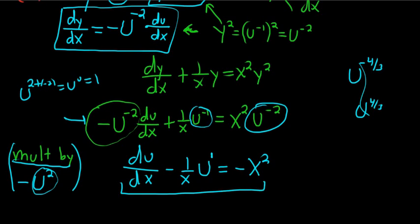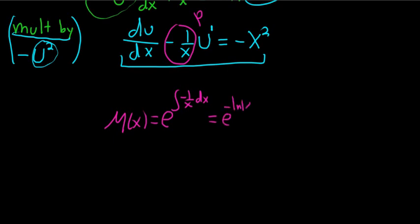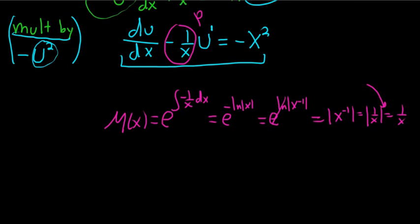This equation is linear. Now we compute our integrating factor: mu(x) equals e to the integral of P, where P is negative 1/x, dx. This integrates to e to the negative ln|x|. Bring the negative 1 upstairs: e to the ln of x to the negative 1. The e and ln cancel, giving |x| to the negative 1, which is 1/|x|, and assuming x is positive, mu(x) equals 1/x.